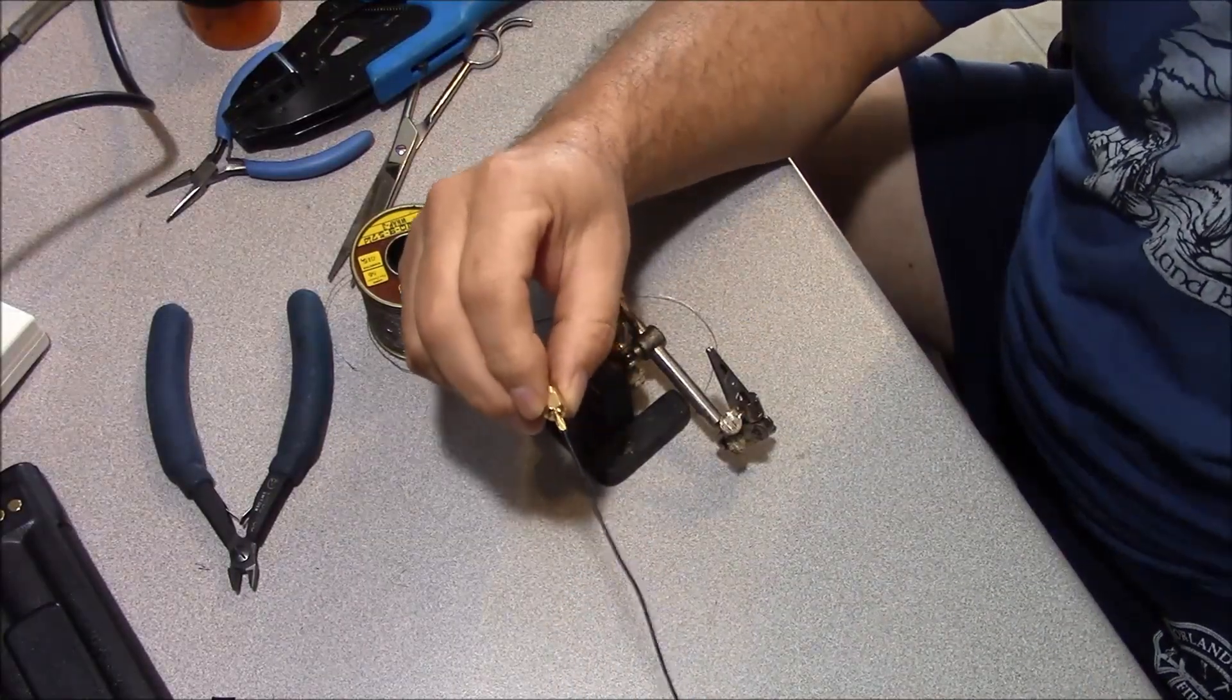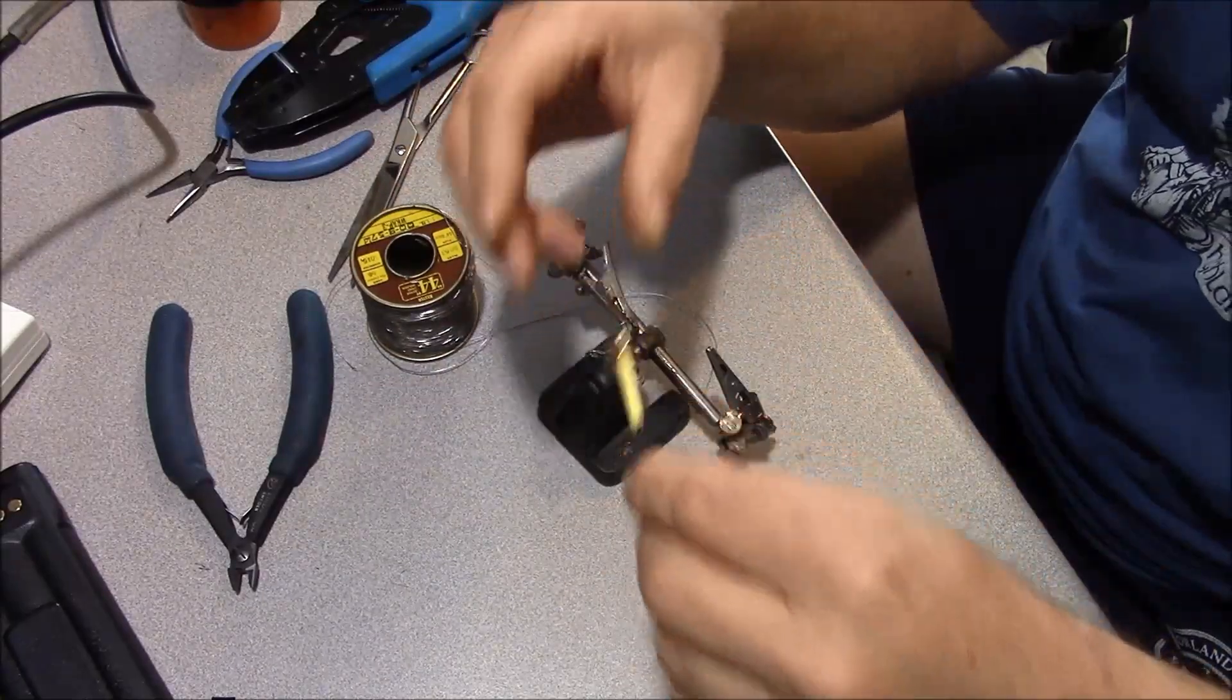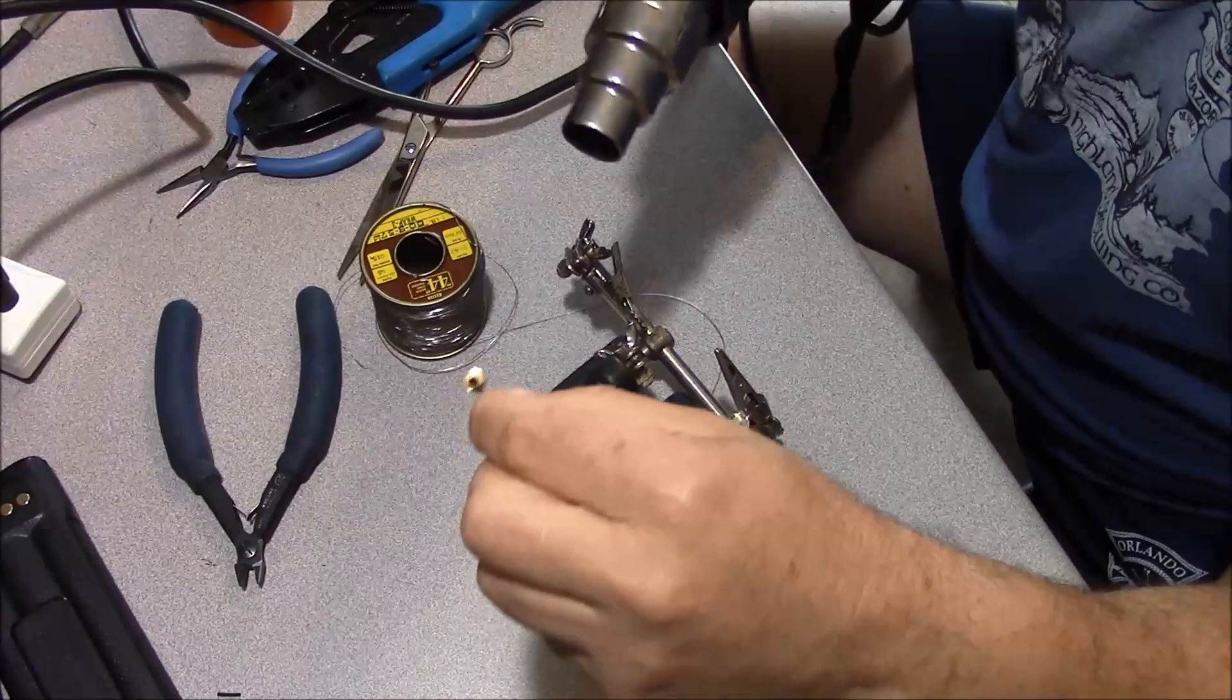After applying the crimp, take your heat shrink down. Place it over the tail of your connector and use your heat gun.